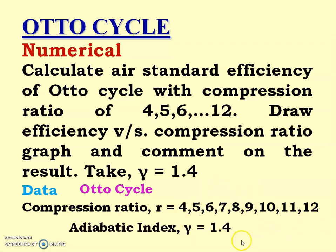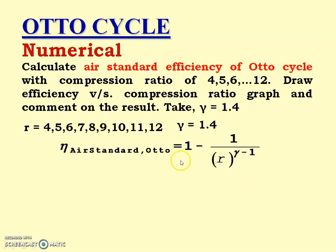Gamma = 1.4 and we have to calculate the efficiency for all these compression ratio cases, then draw the graph between efficiency and compression ratio, and finally comment on the result. The efficiency equation is: 1 minus 1 upon R raised to (gamma minus 1).